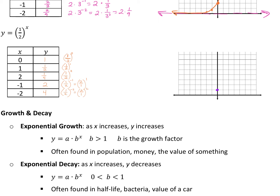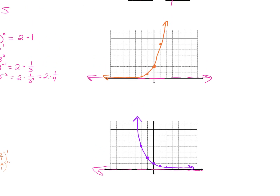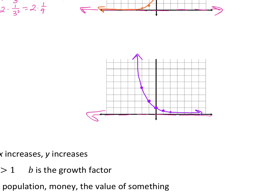Plot those points: zero, one; one, one half; two, one fourth; negative one, two; negative two, four. Now this one goes the other way. Asymptote's still the x-axis, but now it's kind of on its way down. We call the first ones exponential growth — as you work to the right, it's increasing. We call these ones exponential decay — it's decreasing as you go, getting smaller and smaller.